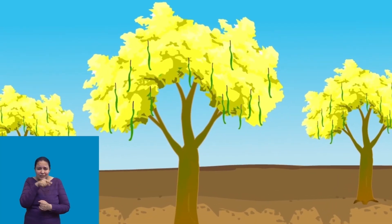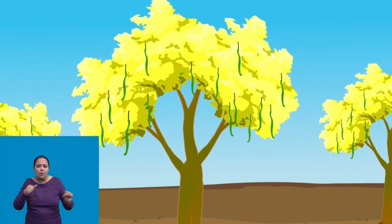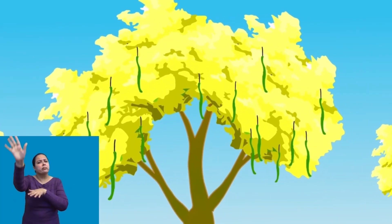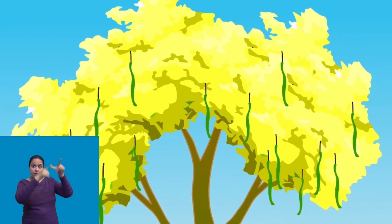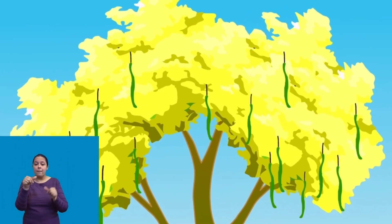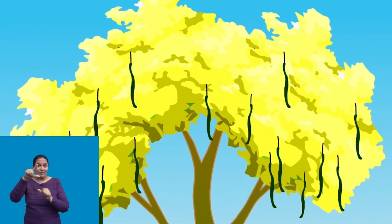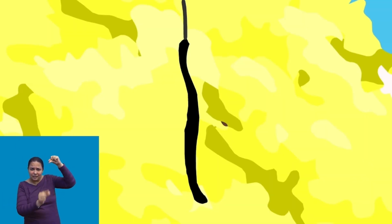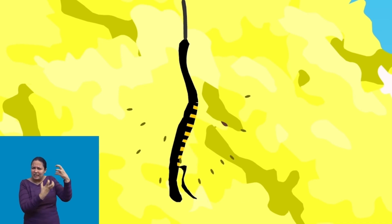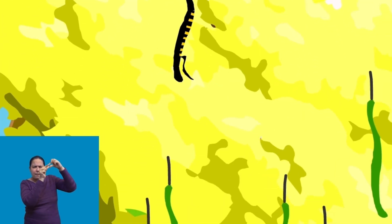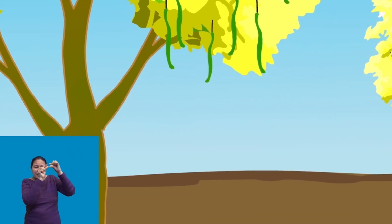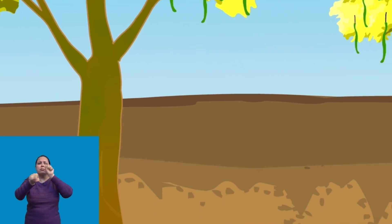You will be surprised to know about Amalthus. It has seeds enclosed in pods. When these pods ripen, they burst with a loud sound, scattering to far off places.